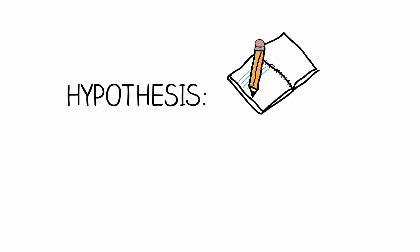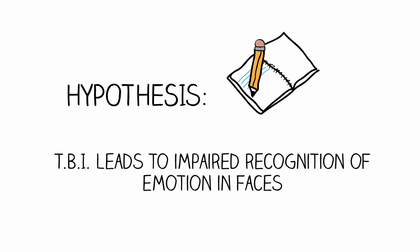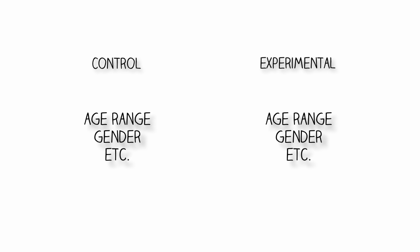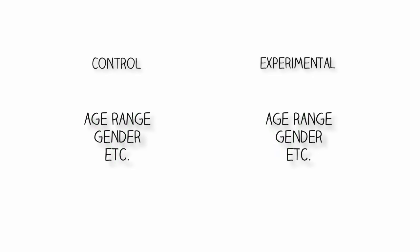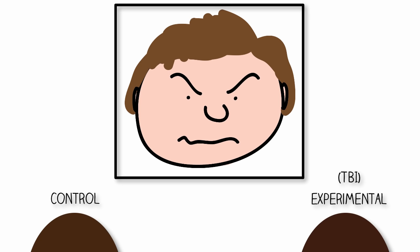They formed a hypothesis that TBI leads to impaired recognition of emotion in faces. Their solution was to create a group exactly equal to the TBI group in every way except having TBI — same gender, sociocultural, and age characteristics, just not brain damaged. Then they tested each group by showing them pictures of faces and asked them to identify the emotions in the pictures.